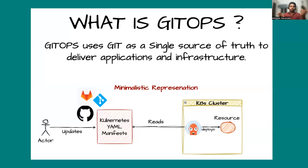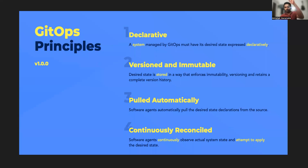If someone has managed to get a wrong change into a Git repository, your GitOps controller will blindly deploy the wrong change. That's why it is essential to have proper checks in your Git repository that you are using for GitOps. These four principles are what you have to follow if you want to write a GitOps tool or a Kubernetes controller based on the GitOps principles.